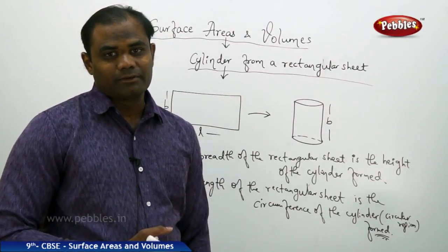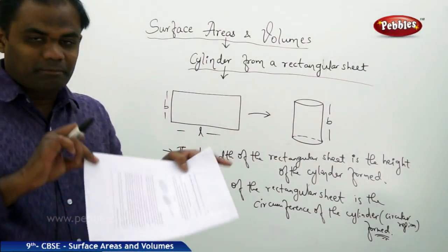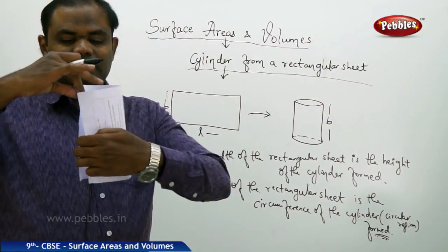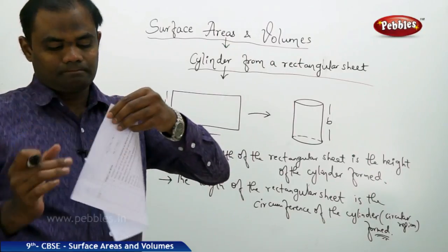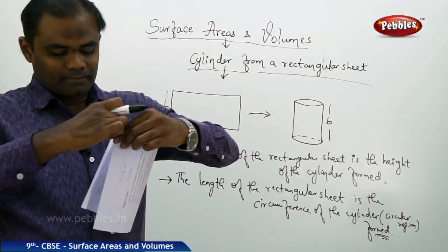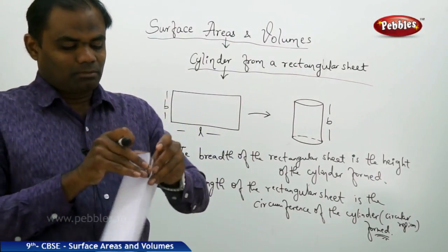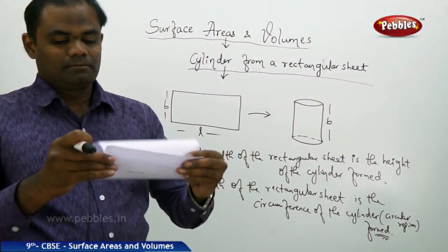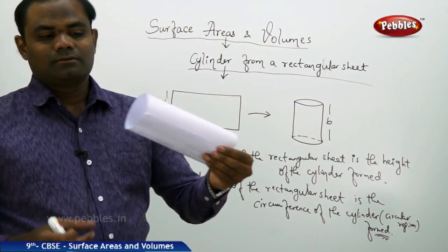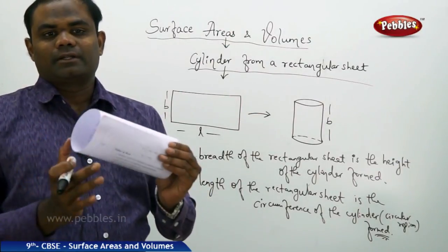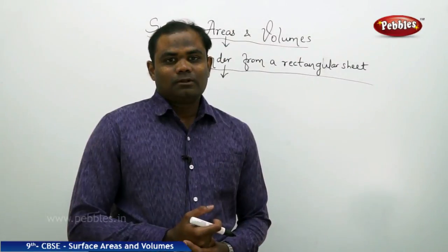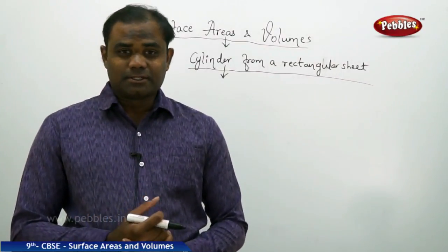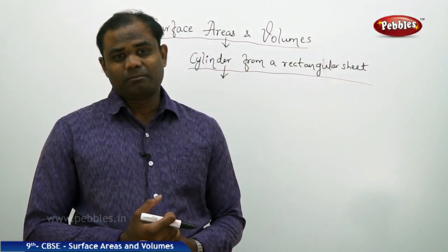Let's see how these two dimensions are related. The same sheet of paper which is a rectangle now becomes a cylinder. Now that we have discussed about a cylinder derived from a rectangular sheet of paper, let's see what could be the surface area of a cylinder.